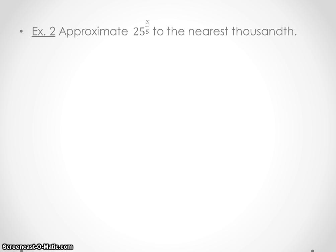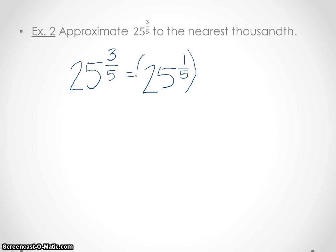Next example: approximate 25 to the 3/5 power to the nearest thousandth. Notice we have a different rational exponent here. Let's break this down. We could write it one of two ways: 25 to the 1/5 power, with the 3 on the outside — or equivalently, 25 to the 3rd power and then take that to the 1/5 on the outside. Either one of these expressions works.